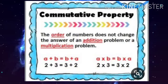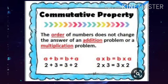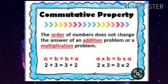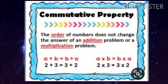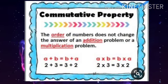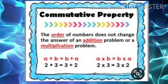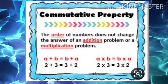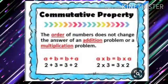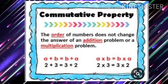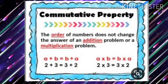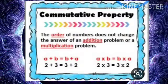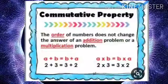In conclusion, for the commutative property, the order of numbers does not change the answer of an addition problem or a multiplication problem. In general form: a plus b equals b plus a. For example, 2 plus 3 is equal to 3 plus 2, and both products will be equal to 6. The order of numbers does not change the answer.